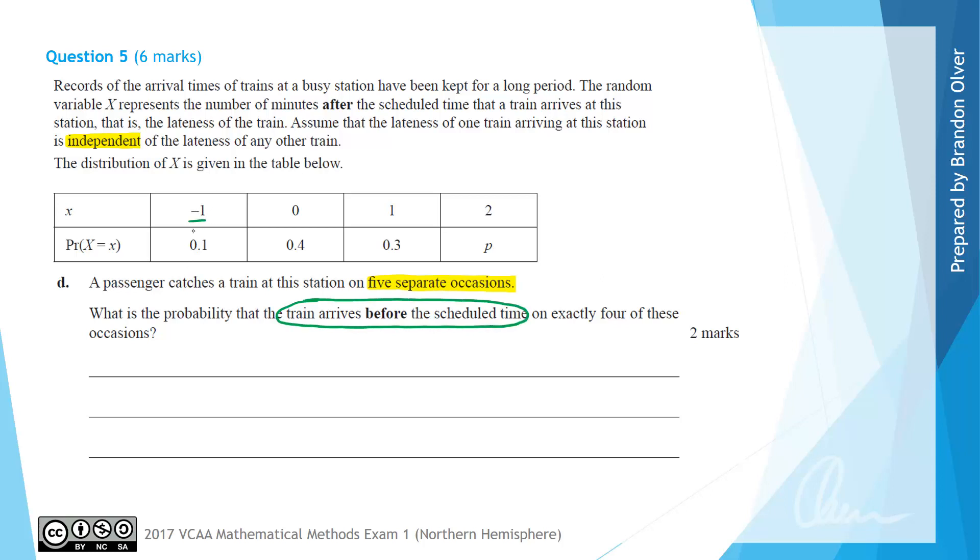So a train arriving before the scheduled time is on our probability distribution above the same as X being negative 1, which gives a probability on each occasion of being 0.1. And because each occasion is independent, we can actually see that Y is going to be distributed binomially with 5 trials and a probability of success of 0.1.